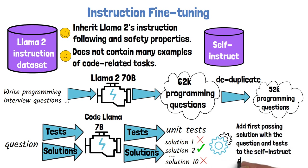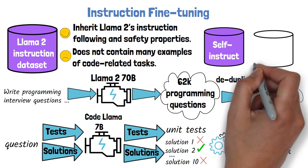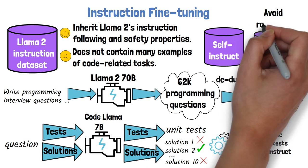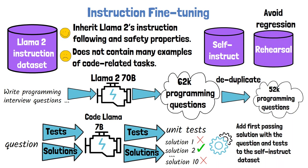The third dataset is Rehearsal, which contains a small proportion of data which was already used in the first step of the pipeline to avoid regression during instruction fine-tuning.